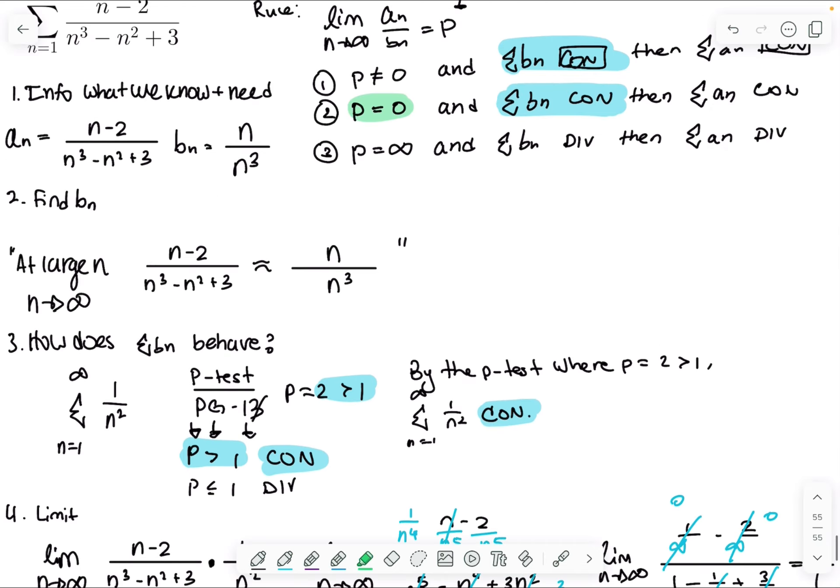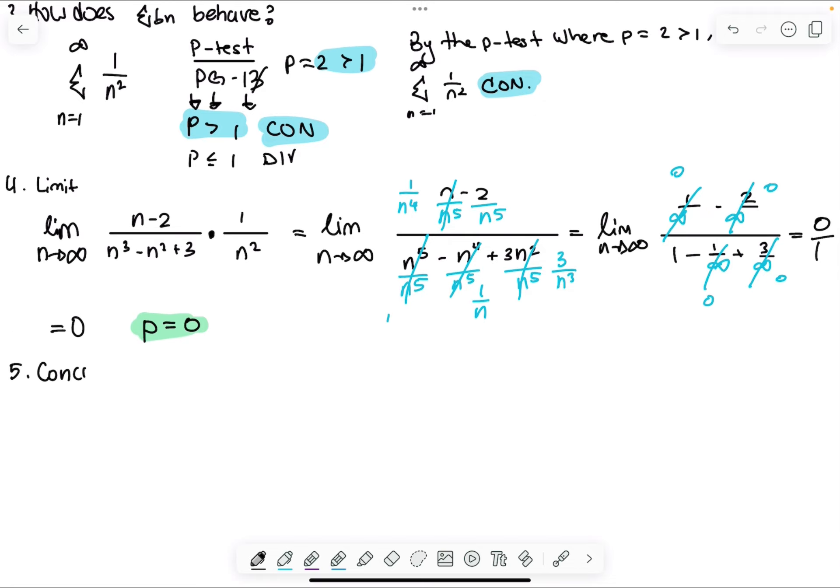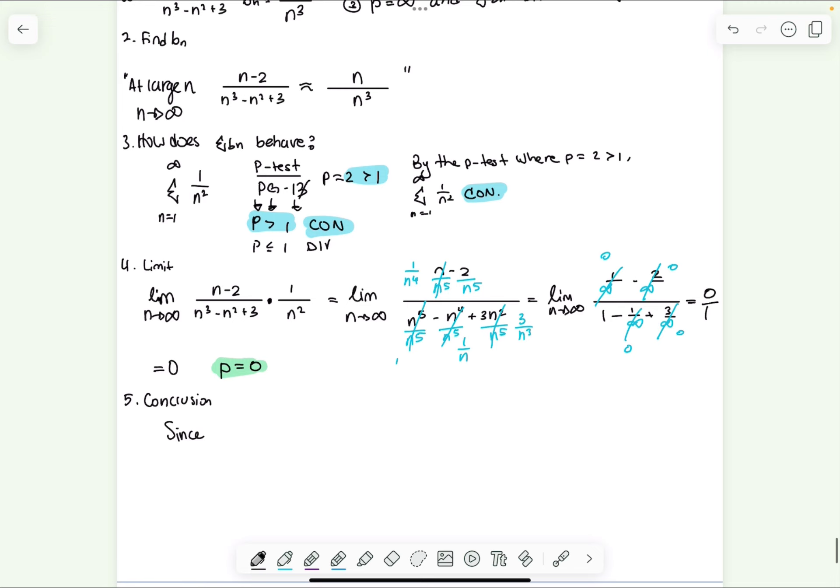So we have that rho is zero. And so we go back to our rule, rho is zero, we have this condition. And so therefore we can say that our series, our given series converges. And so that brings us to our last step, which is C for conclusion, where we put everything together in a nice sentence. Since, and I go by the order of my work, so blue and green. So blue says that this series converges, we have n converges, and that is equal to one to infinity, one over n squared. You can put one over n squared, you can put this, doesn't matter.